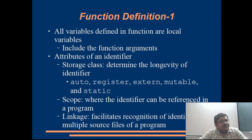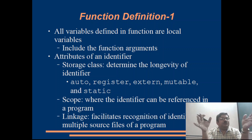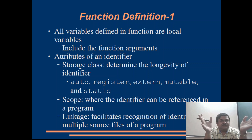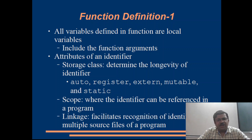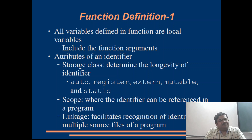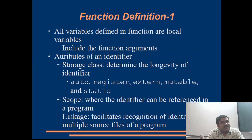By default, all variables defined in a function are local to that function. Every function has its own memory space, so whatever identifiers you define within a function are not visible outside that function. This means you can reuse identifier names in two different functions without any conflict. Even the parameters — the function parameters — are also local to the function space.